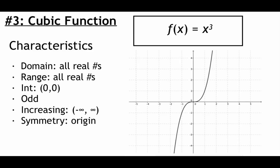Next on our list is a cubic function, f of x equals x cubed. Just like the quadratic, the domain is all real numbers since we can safely cube any number. The range is also all real numbers. It has intercepts at 0, 0. This is an example of an odd function since it has origin symmetry. The graph is increasing over the entire interval from negative infinity to positive infinity — as we work left to right, the graph is always going up.